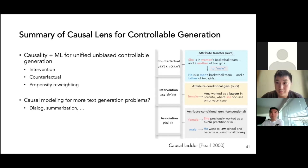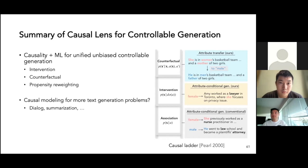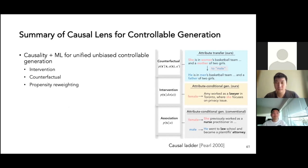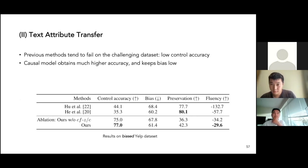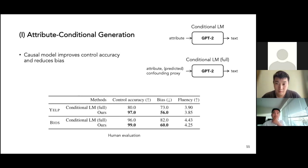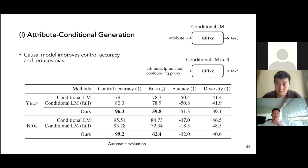Question from the audience: In your causal framework, you mentioned there is a confounder Z, but in your experiments it seems Z is manually identified. Is there any way to automatically identify it?